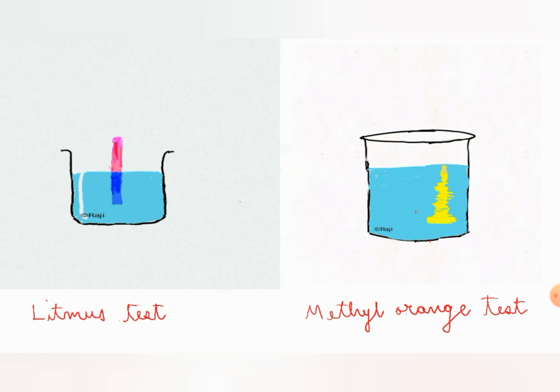You can write like that. Then we can confirm that the solution is basic. Now see this test. This is what we call as methyl orange test. If you are adding a methyl orange indicator into basic solution, the solution will be turning yellow in color. Okay, thanks for watching. See you in the next video.